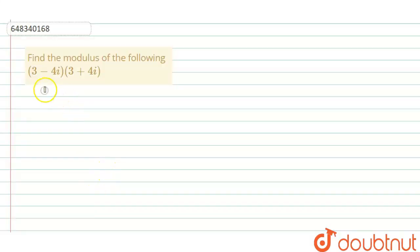Hello everyone, here is our question which says find the modulus of the following: 3 minus 4 iota multiplied by 3 plus 4 iota.